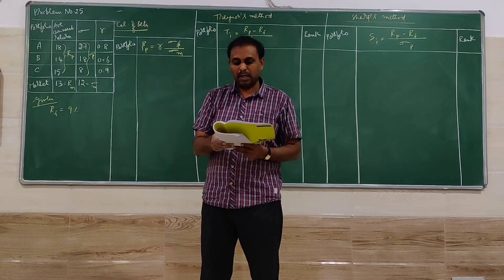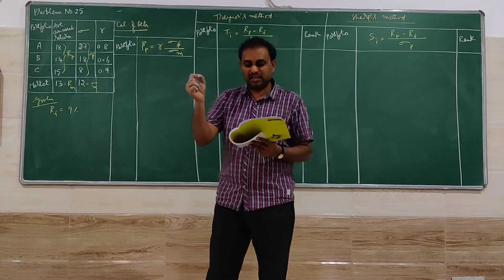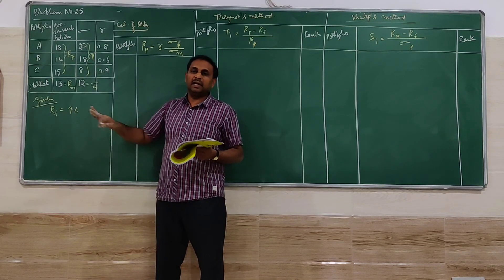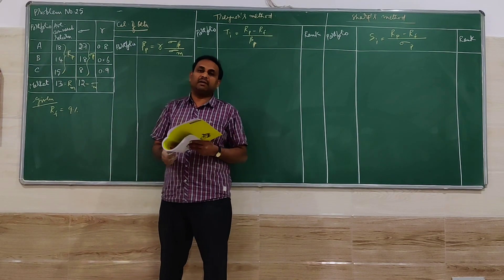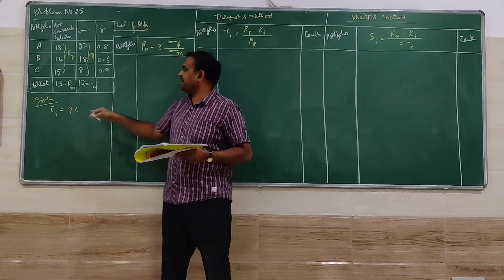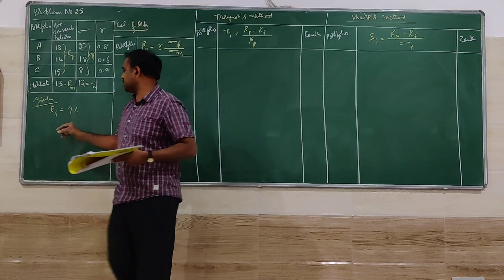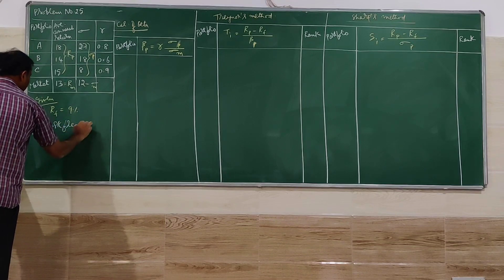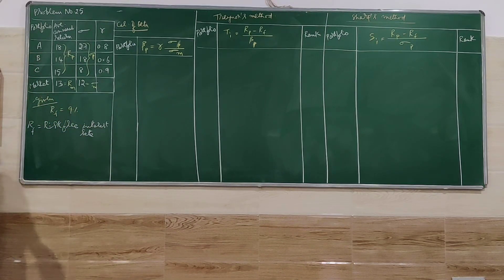The question asks us to calculate the portfolio ranking based on Sharpe's model and Treynor's method and interpret the result. One important piece of information is given: the risk-free rate of interest is nine percent. This means any investor investing in the safest investment earns a minimum return of nine percent, called RF.